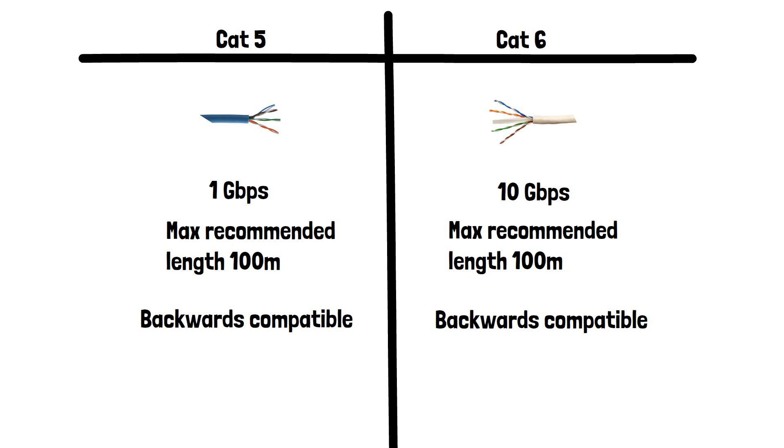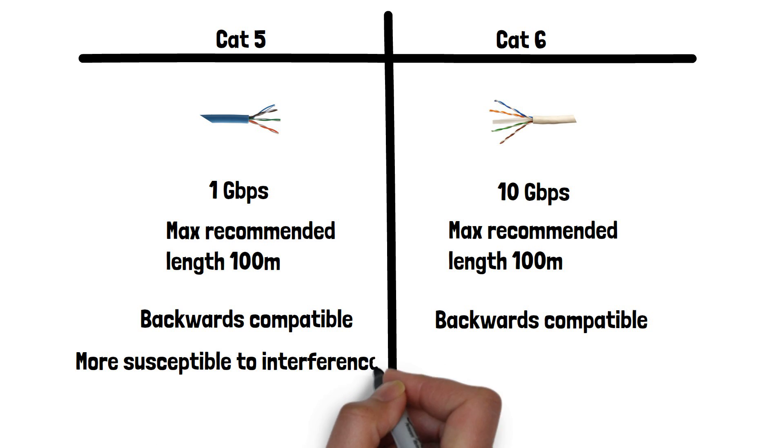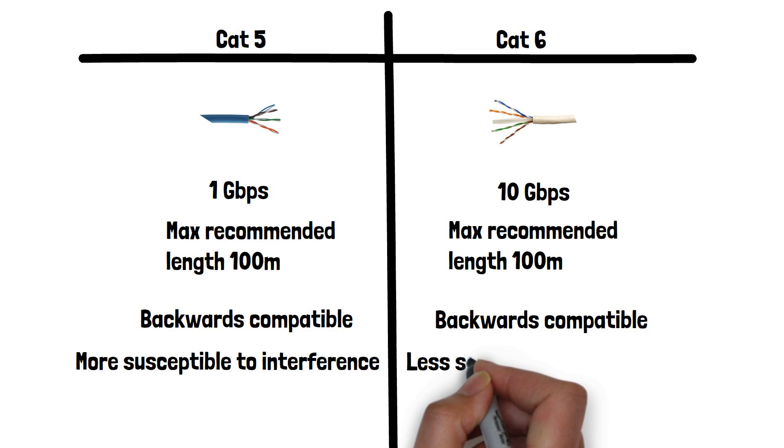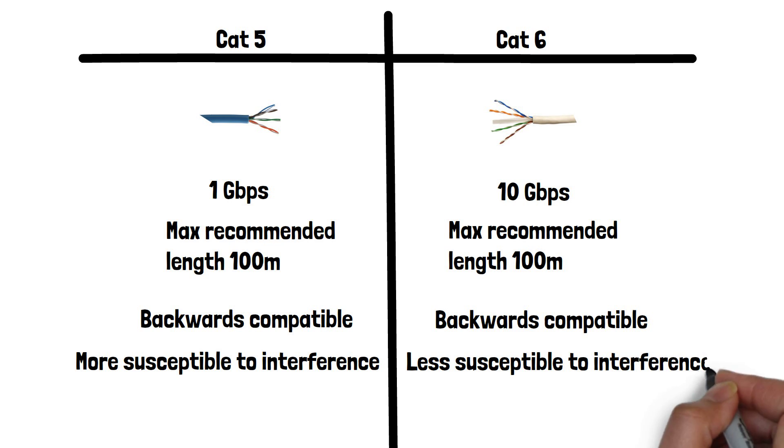Now let's look at interference, also known as crosstalk. Cat5 cables are more susceptible to interference and crosstalk compared to Cat6 cables. This means that in high traffic or noisy environments, Cat5 may experience more signal degradation, leading to slower speeds or loss of signal completely.